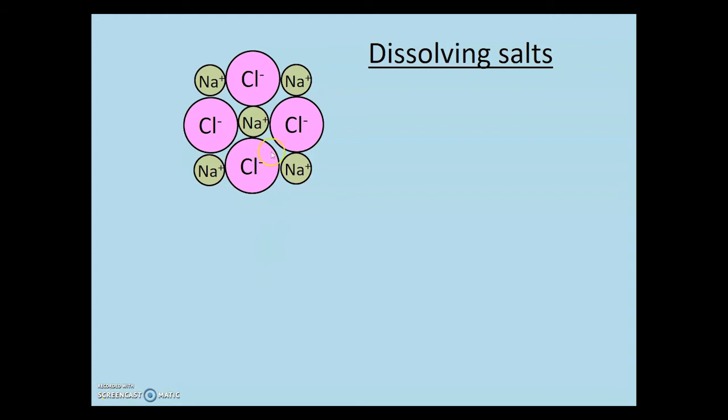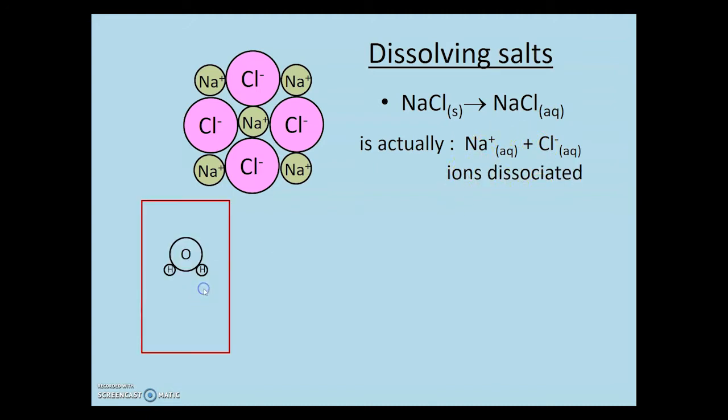Let's consider a salt dissolving. One must learn to recognize what that little S and AQ mean. It's showing how a solid salt is becoming an aqueous solution. Actually, the ions have separated, dissociated from each other. Consider a water particle, which we know is a dipole, to be represented just like that. A negative and a positive side to the molecule.